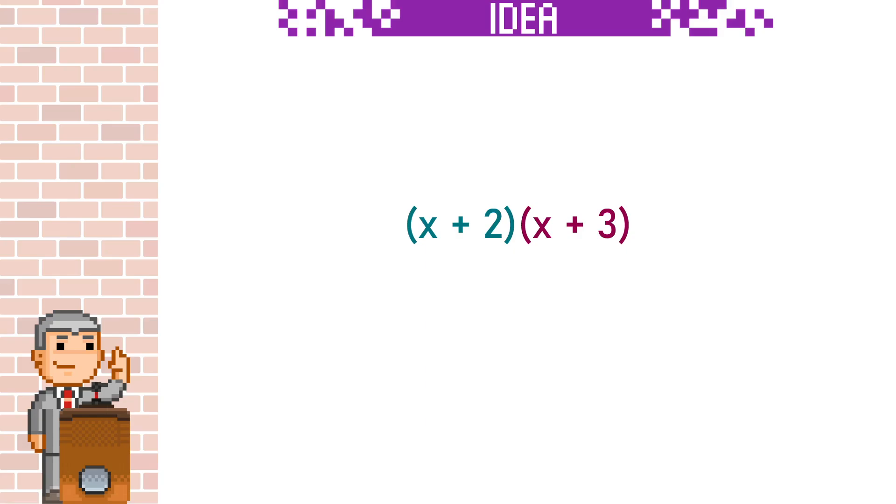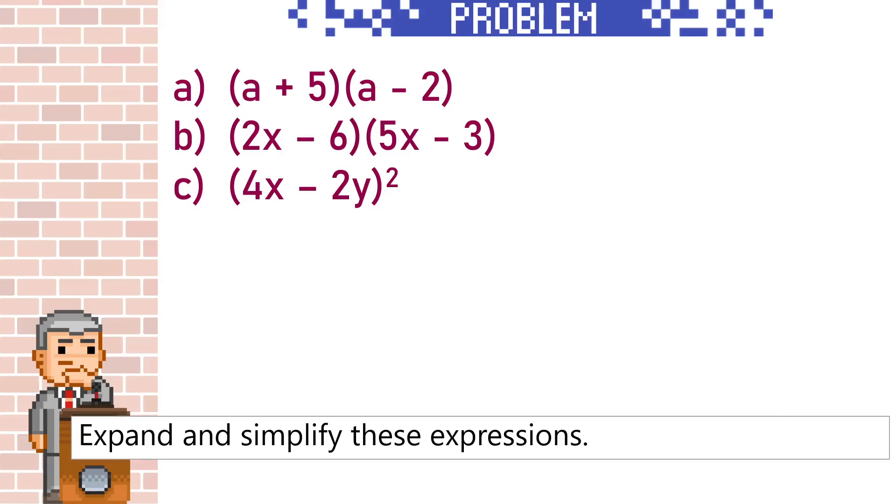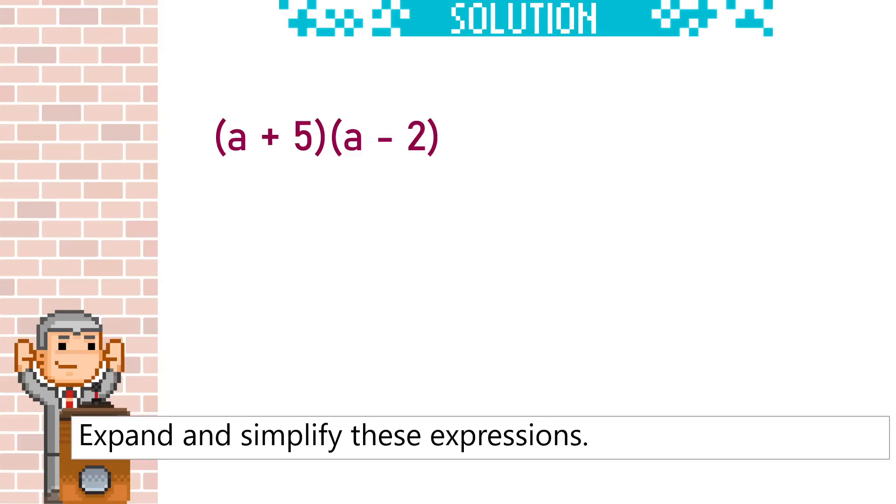You can see that the term on the outside of this quadratic is x plus 2. This means we need to multiply everything in the bracket by x and then by 2. Let's go through these questions. To expand a quadratic, we multiply each term in the first bracket by each term in the second.